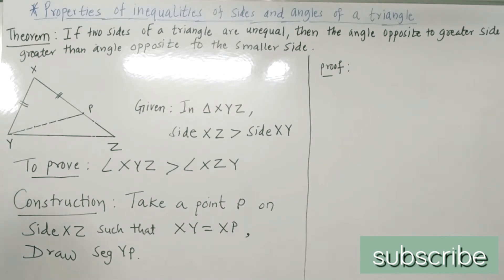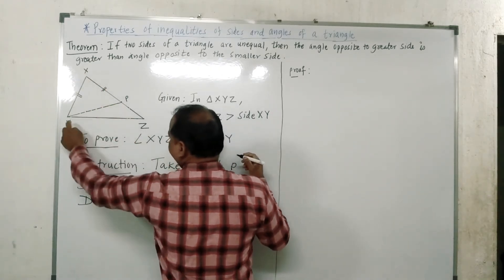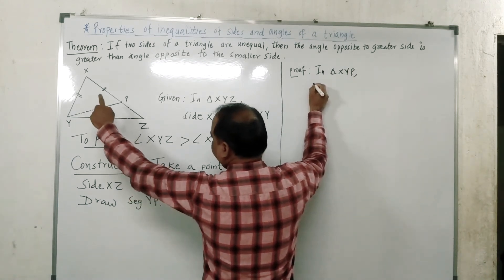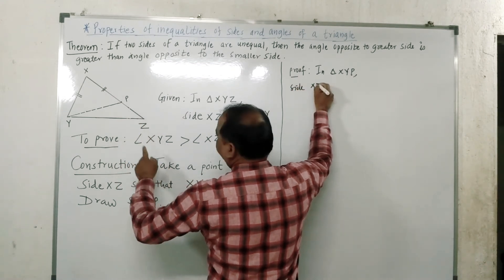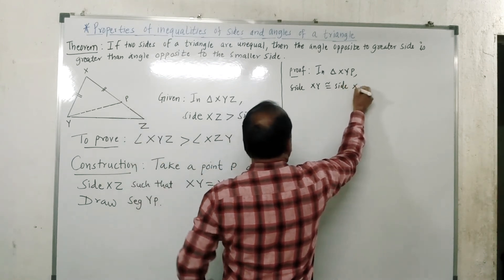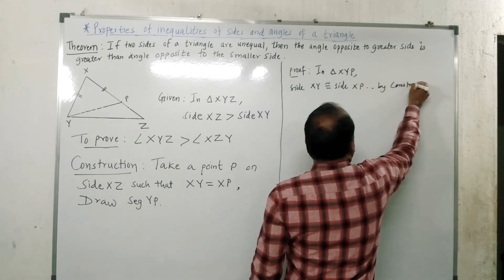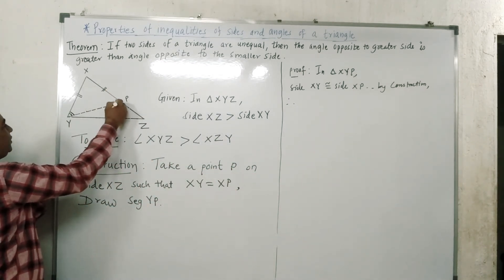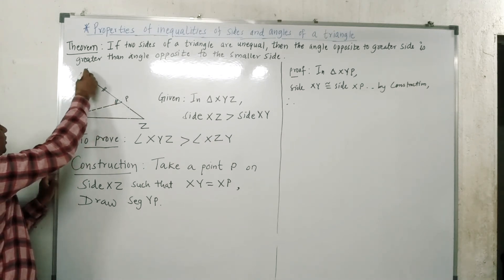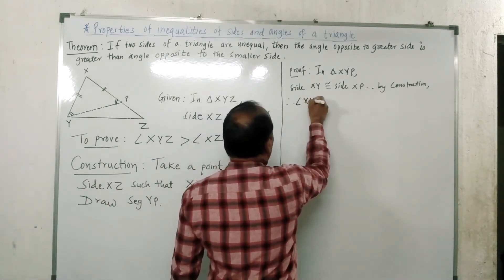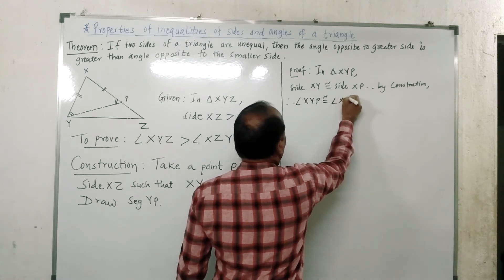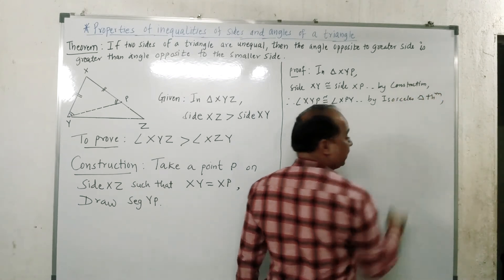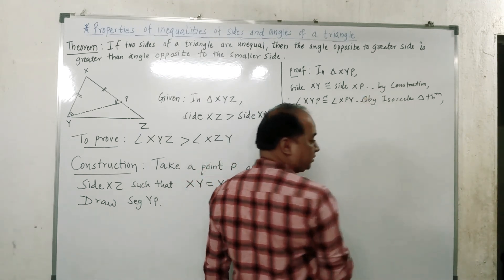Now in triangle XYZ, since XY is equal to XP, these two sides are congruent. Therefore, by the isosceles triangle theorem, angle XYP is congruent to angle XPY. Therefore, angle XYP is congruent to angle XPY by the isosceles triangle theorem — this is statement number one.